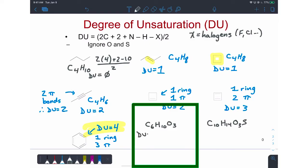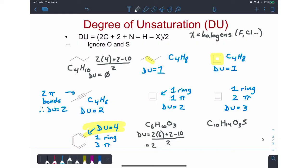In this example, we just have the molecular formula. We can use the degree of unsaturation formula. So 6 carbons times 2 is 12, plus 2 is 14, minus 10 is 4. Ignore oxygen. Divide it all by 2. That gives us 2 degrees of unsaturation.